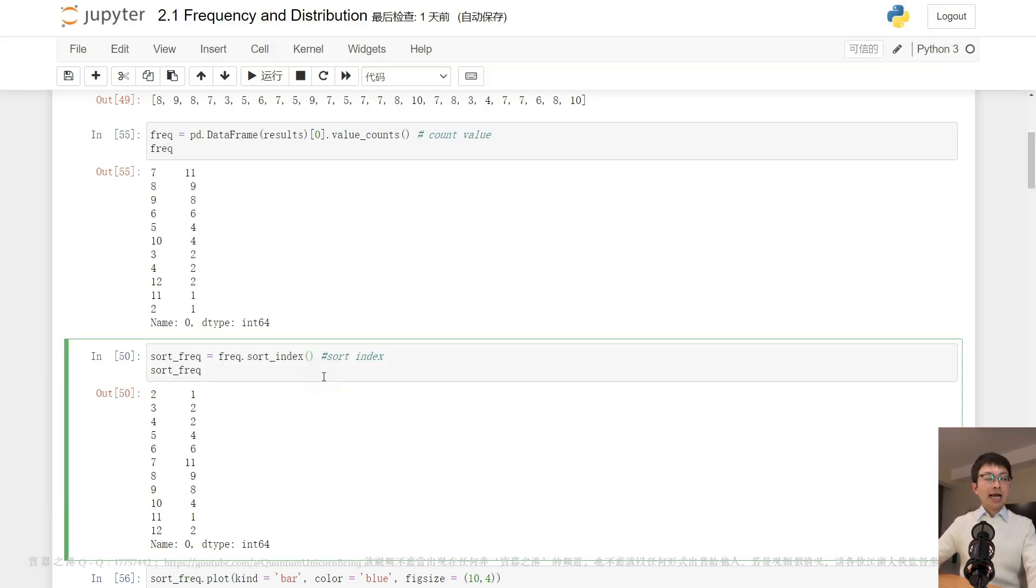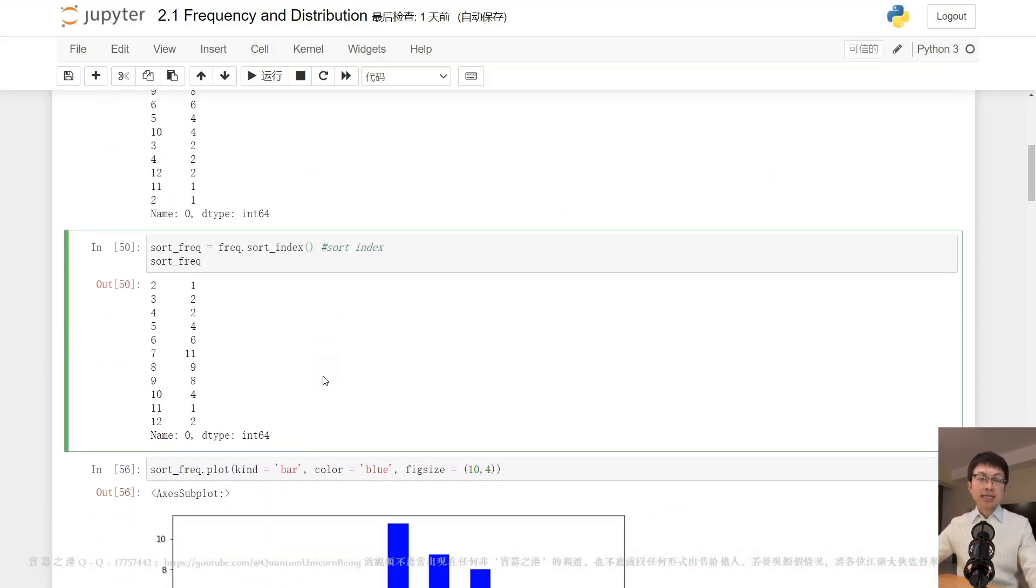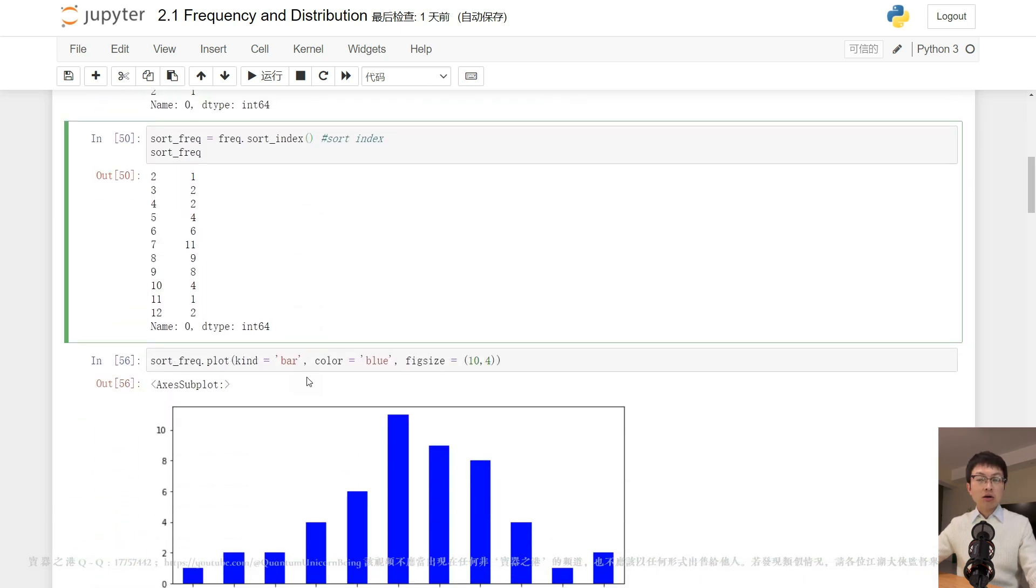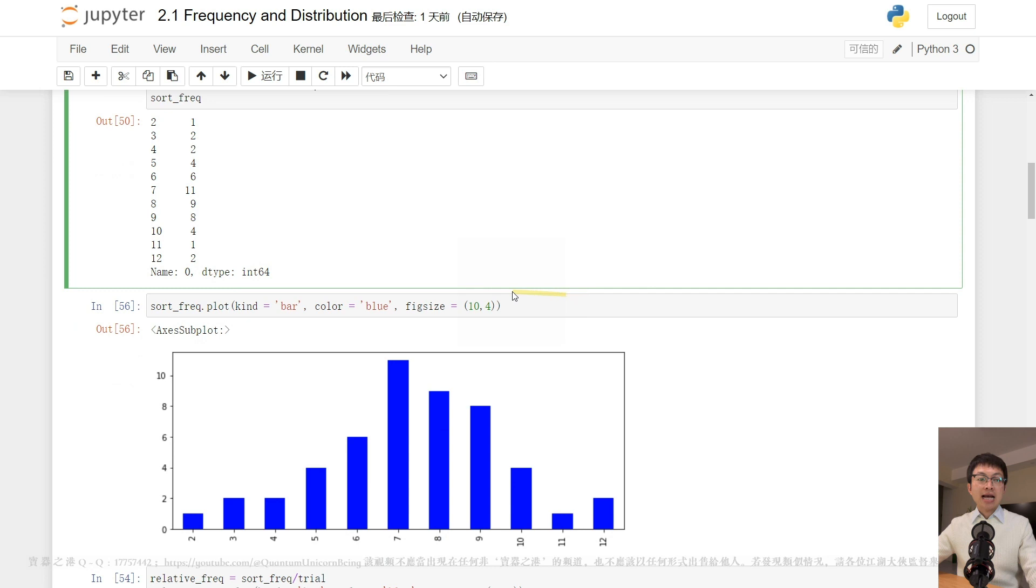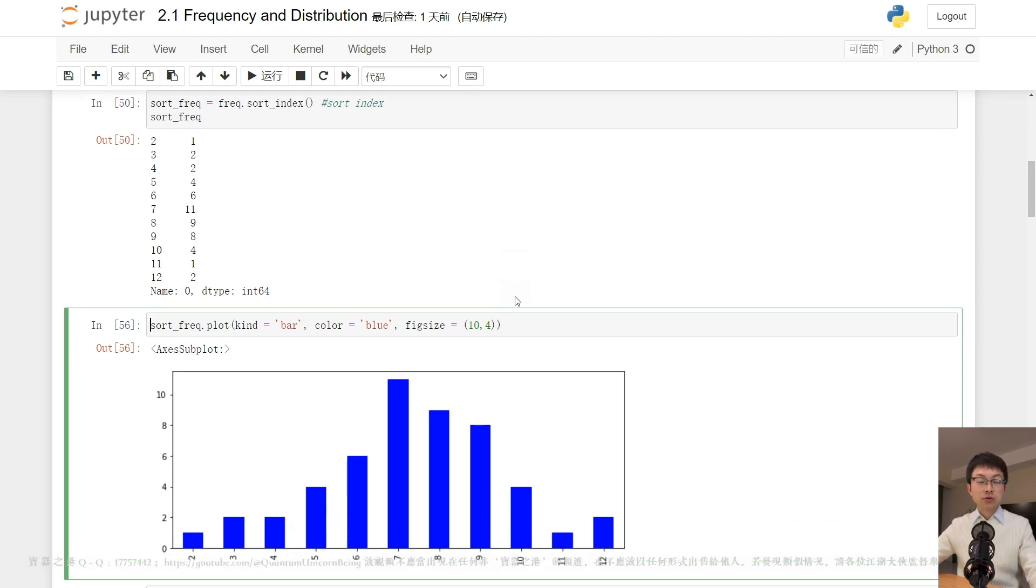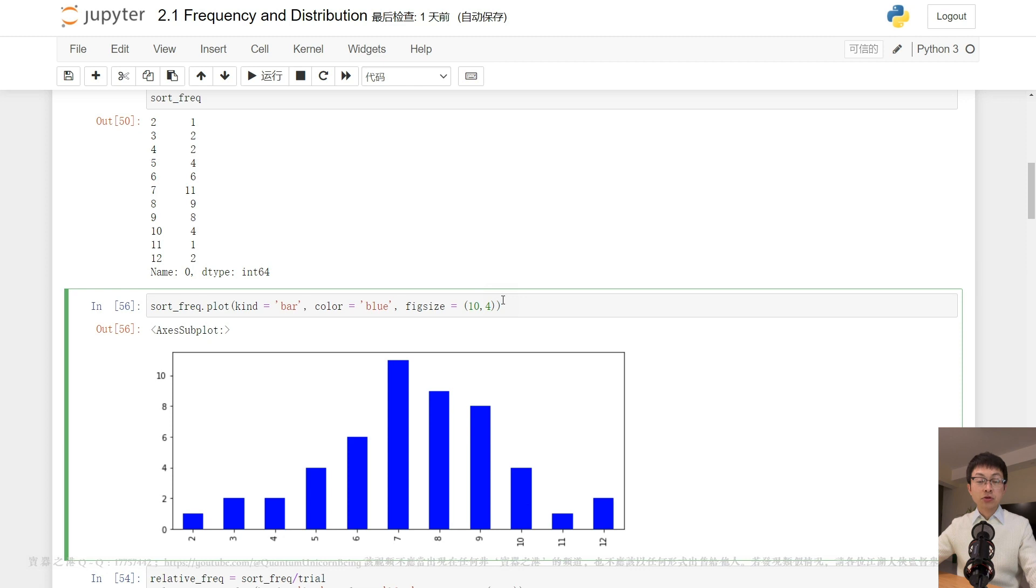Next, we can present the frequency data using a bar chart, which shows how the frequency changes as the number of trials increases. To compare the frequency of different trials, we must convert frequency into relative frequency.